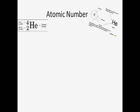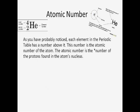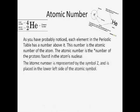The atomic number. As you have probably noticed, each element in the Periodic Table has a number above it. This number is the atomic number of the atom. The atomic number is the number of the protons found in the atom's nucleus. The atomic number is represented by the letter Z and is placed in the lower left side of the atomic symbol.